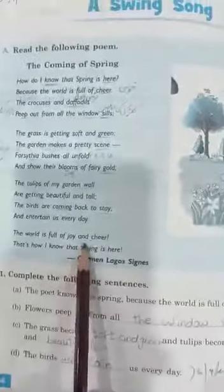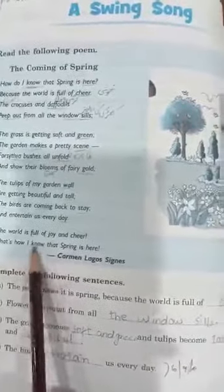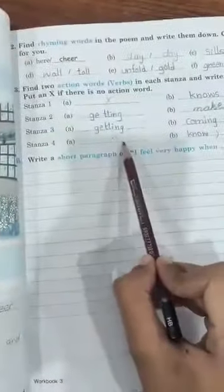Next, stanza four. There is only one verb, that is 'know.' We will write in the first blank a cross and write only one verb, 'know.' You have to write this in your notebooks.